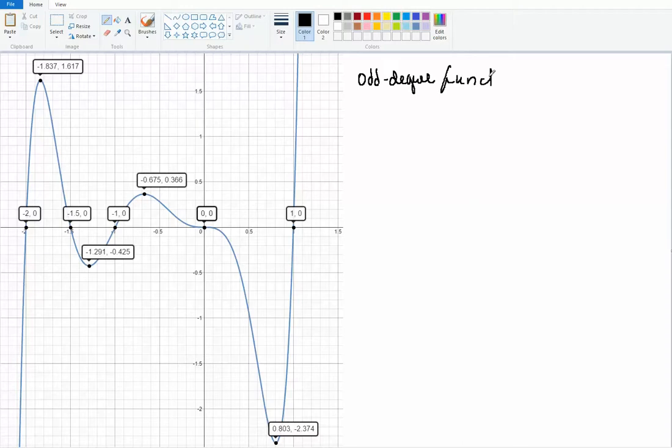How do I know this? I know this because of the end behavior. When you look, the graph is going to positive infinity, and over here, the graph is going to negative infinity. As x goes to negative infinity, the function goes to negative infinity. As x goes to positive infinity, the function goes to positive infinity.